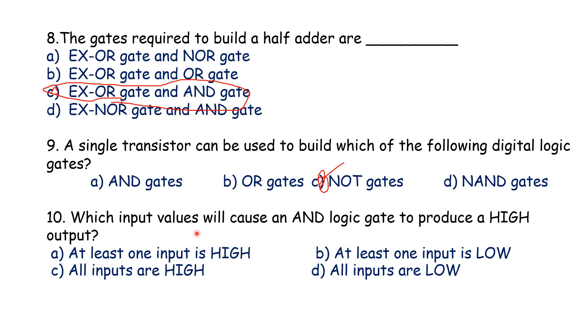The tenth question: which input values will cause an AND logic gate to produce a high output? Option C is the correct answer — all inputs are high. For an AND gate, the output is high only when both inputs are high. For an OR gate, if at least one input is high, the output will be high. That's why all inputs being high is the correct answer here. Hope you understand. If you have any doubts, put them in the comment box. Thank you. All the best.